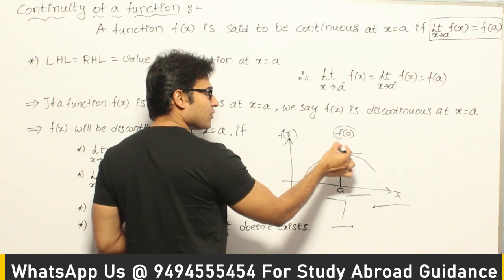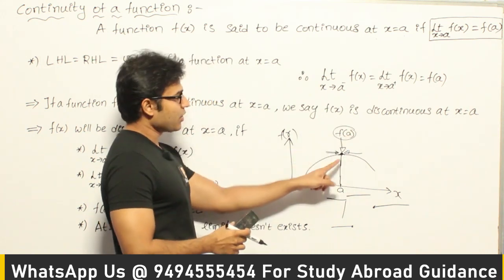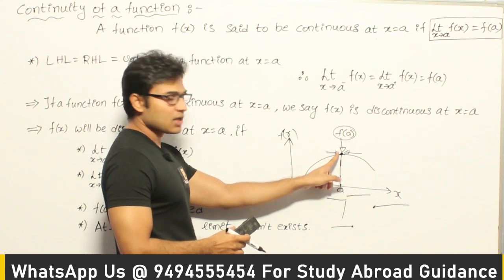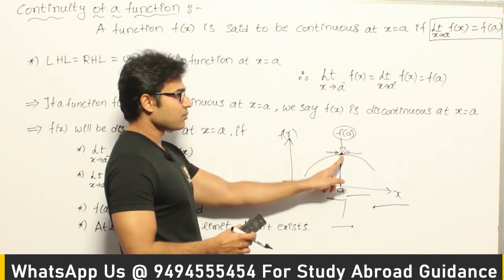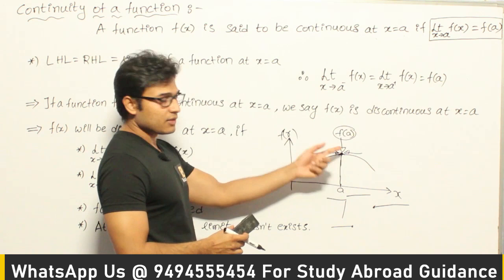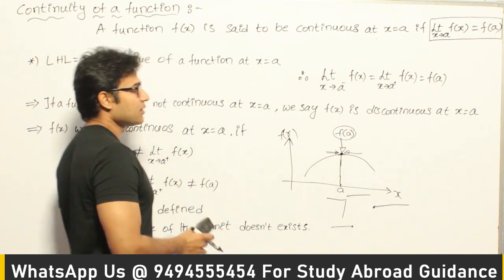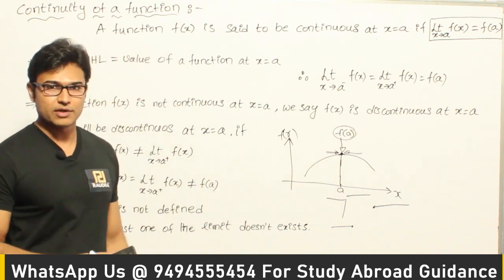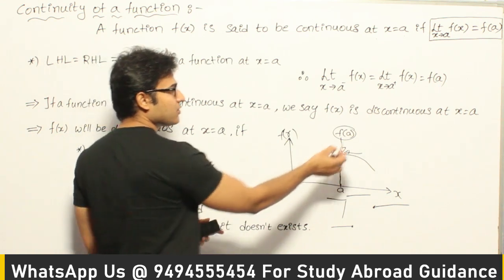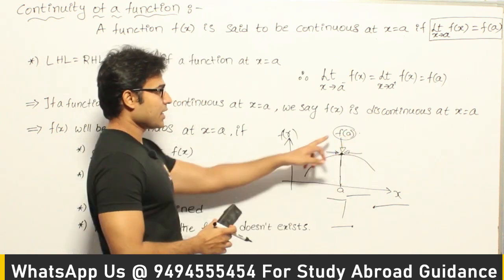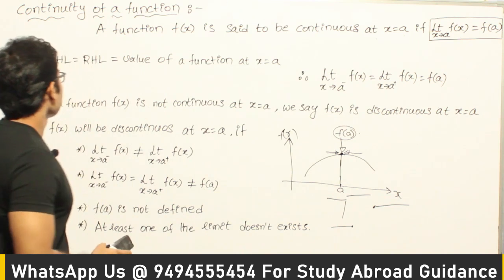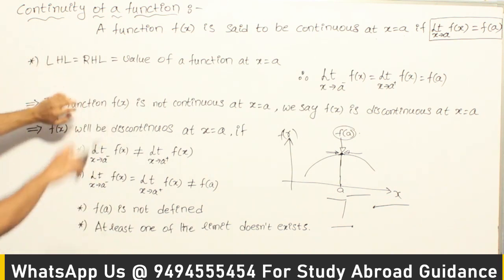As we approach a, we should have the same value f(a). Which means if that point has some value both to the left of it and to the right of it, and at that point itself, and all three values are the same, then it is continuous according to the formal definition. As we approach a, it should have the same value as what it had at a.